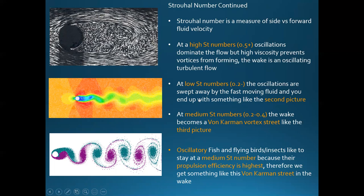The Goldilocks zone is a medium Strouhal number between 0.2 and 0.4, when around a cylinder you get a von Kármán vortex street. It's interesting to note that oscillatory fish, flying birds, and insects all stay at this medium Strouhal number because their propulsion efficiency is highest. So we should expect to see something resembling a von Kármán vortex street around swimming fish.